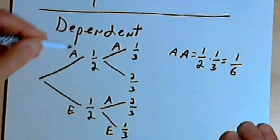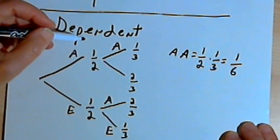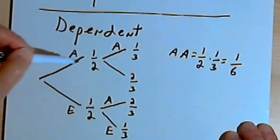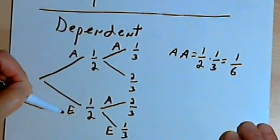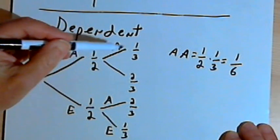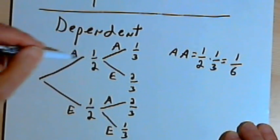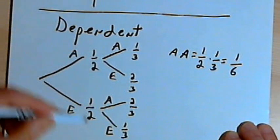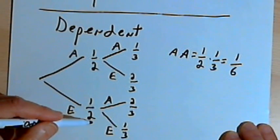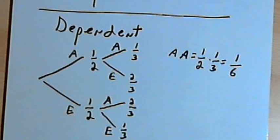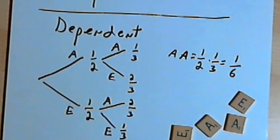So these are called dependent events, because the probabilities that I end up with the second time around depend on what happened the first time. The probabilities the second time for getting an A or getting an E are different if I got an A the first time than if I got an E the first time. That happened because in a game like this, when I took the pieces out, I did not replace them — so this is probability without replacement.